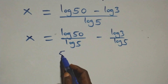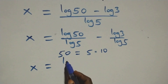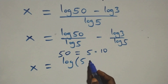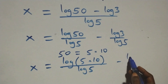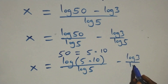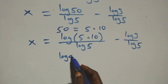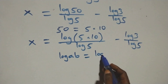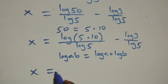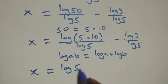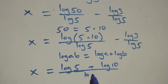We can express 50 as 5 times 10. So x equals log(5 times 10) over log 5, minus log 3 over log 5. This also follows the log product rule, where log(a times b) is the same as log a plus log b.